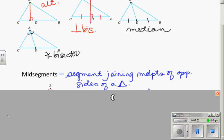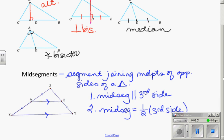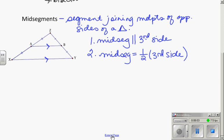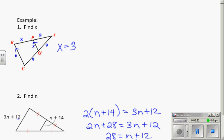So, a mid-segment. A mid-segment is a segment joining the midpoints of the opposite sides of a triangle. So it connects the midpoints. It has two unique properties. And that is that, number one, it's parallel to the third side. So in our example, AB is parallel to XY, as you see marked. And the mid-segment is one-half the length of the third side. So if AB is 10, XY is 20.